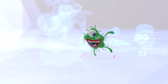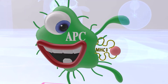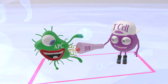Over here we see an antigen presenting cell — let's say a dendritic cell — with his MHC, specifically MHC class 2, on which he's presented his antigen. He is presenting antigen to a T cell, specifically the CD4-positive T cell, as MHC class 2 molecules present antigen to CD4 cells. This is how granulomas begin developing.